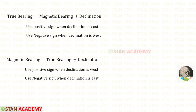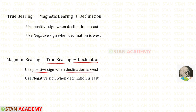Suppose we have to find the magnetic bearing. The formula is: true bearing plus or minus declination. Here we use the positive sign when the declination is west and the negative sign when the declination is east.